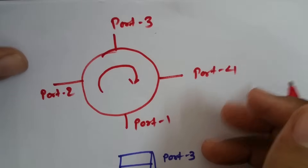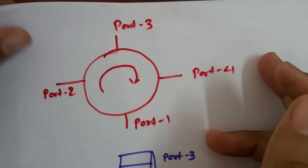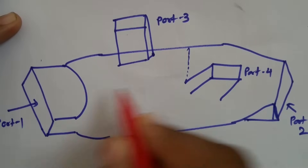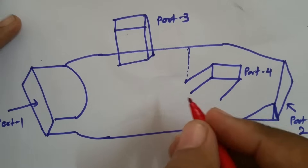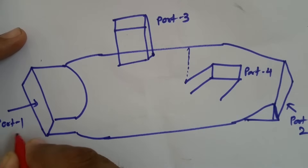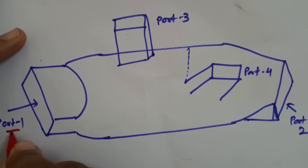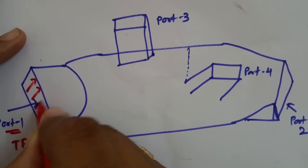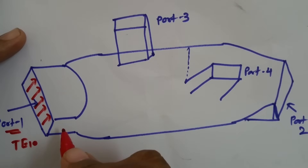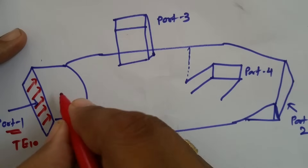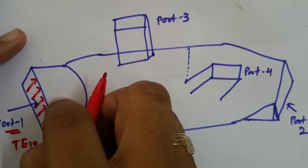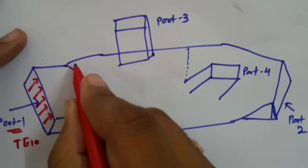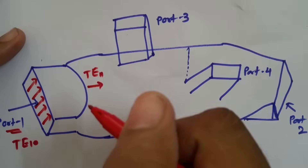Let us try to understand the internal structure. Here we have a 4-port circulator internal structure where I have port 1, port 2, port 3, and port 4. Consider a case where we give input at port 1 with dominant mode TE10 — that will be inserted into a rectangular waveguide. Now this signal is going inside the rectangular waveguide. When it goes inside, the rectangular waveguide is translated into a circular waveguide, so the mode will now be TE11 mode.